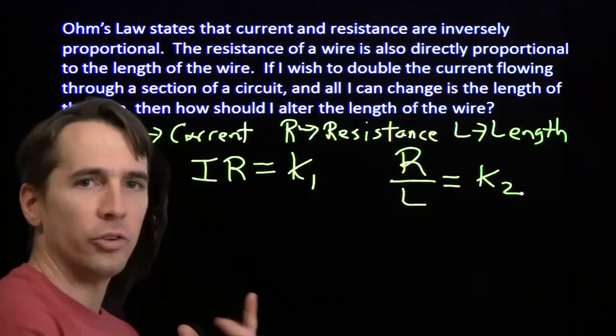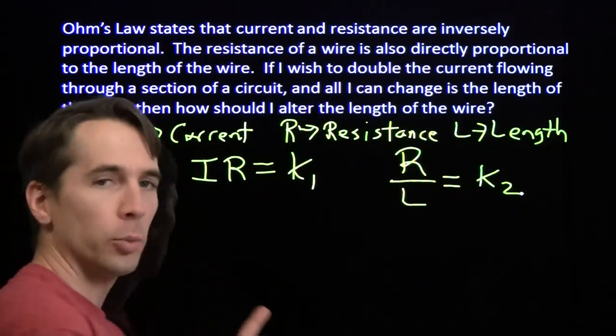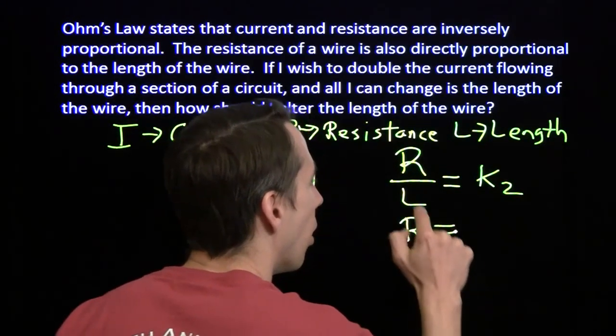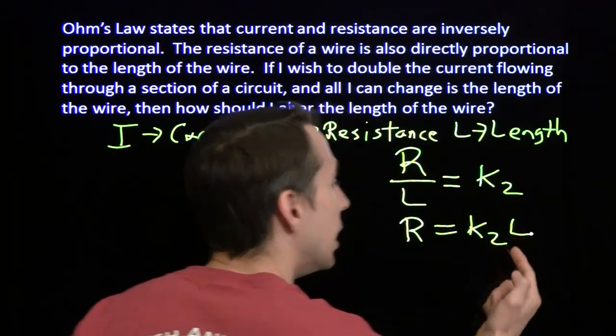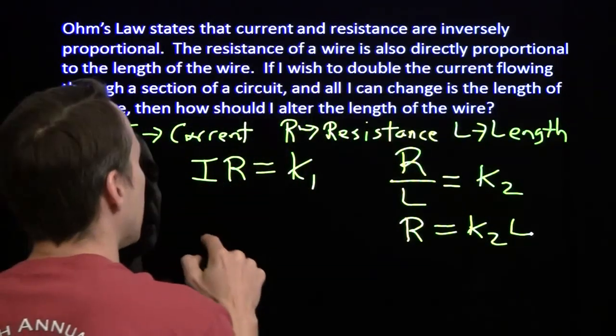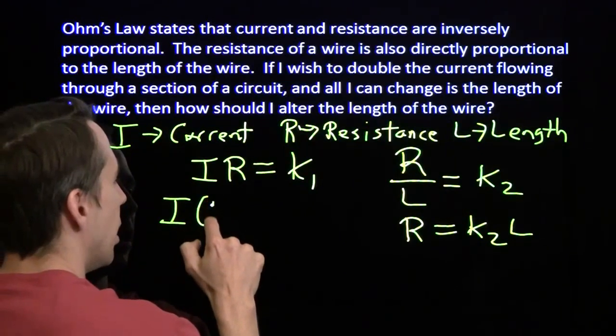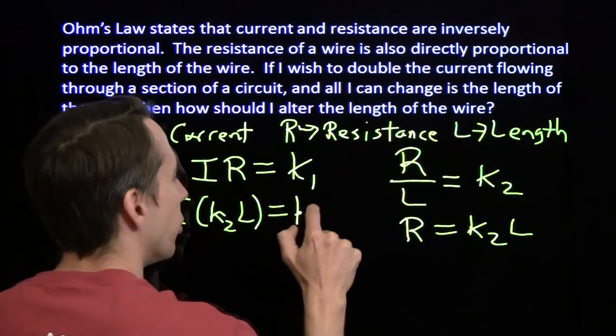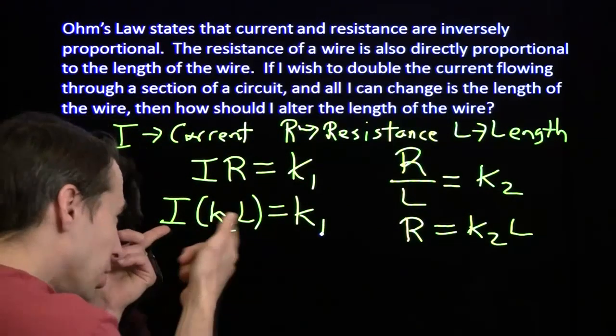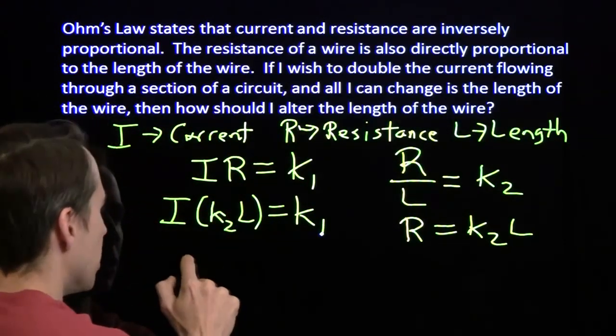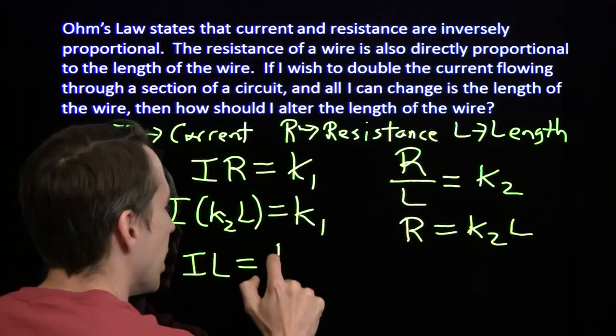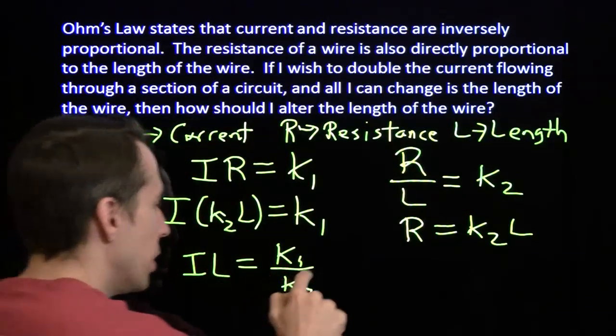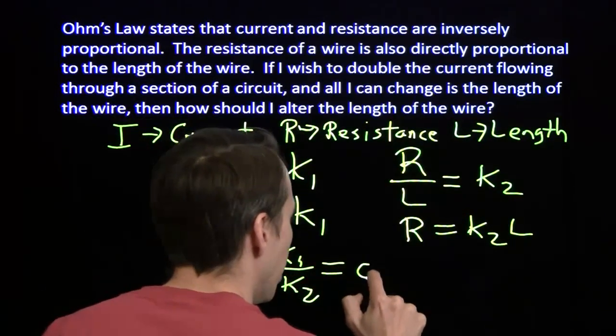Now I want to put I and L together. I want to get rid of R because I want to see how I and L are related. I can solve this equation for R, multiply both sides by L, and substitute this back in over here. I get I times K2L equals K1. I'm going to divide both sides by K2 because I just want to see what happens when I and L are together. We have I times L is K1 over K2. These are both constants, so their ratio, divide one by the other, we get some other constant.